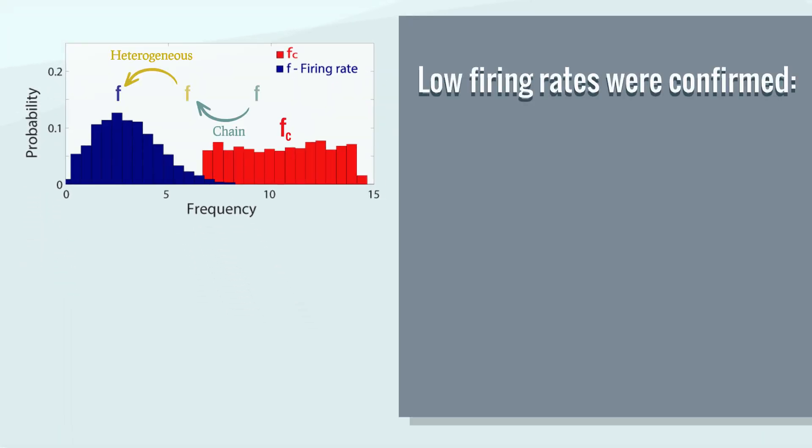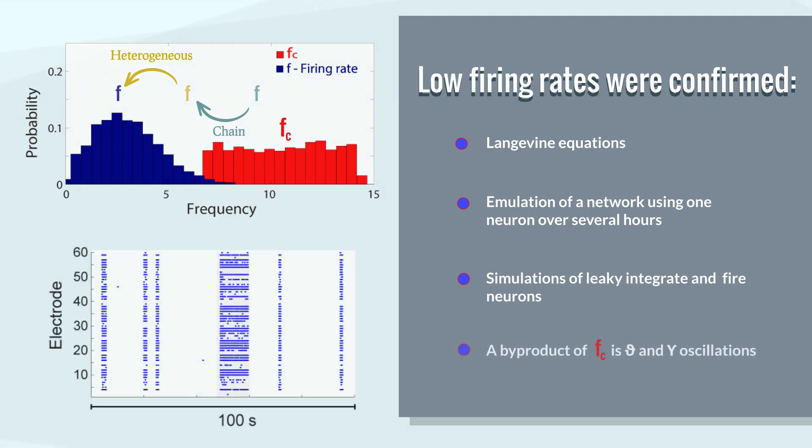This is how low firing rates are achieved in excitatory networks, and it was confirmed in Langevin equations. Emulation of a network using one neuron over several hours. Simulations of leaky integrate-and-fire neurons. A byproduct of fc is theta and gamma oscillations.